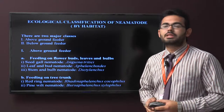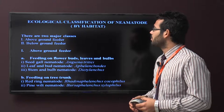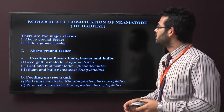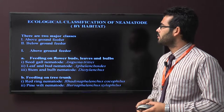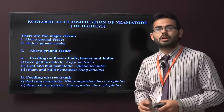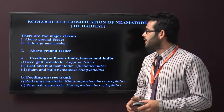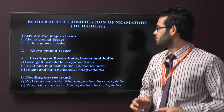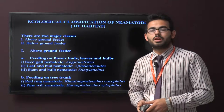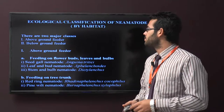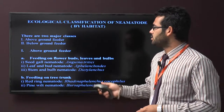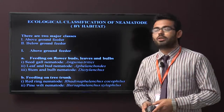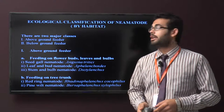Ecological classification of nematodes by habitat. There are generally two major classes: above-ground feeders and below-ground feeders. In above-ground feeders, there are those feeding on bulbs, leaves, and buds — including seed gall nematodes, leaf and bud nematodes, and stem and bulb nematodes. The second type feeds on the tree trunk.